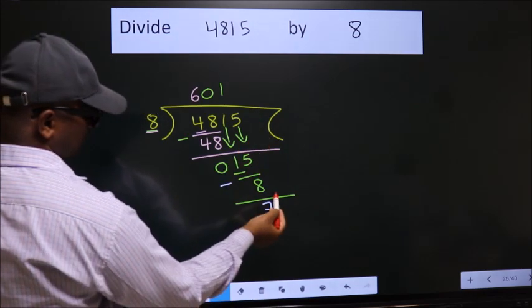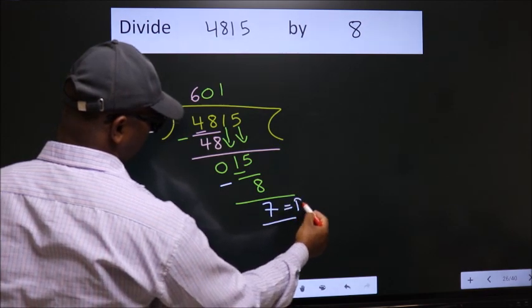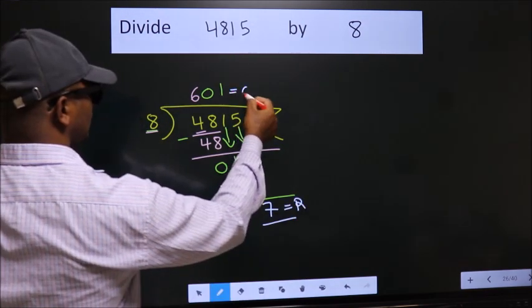No more numbers to bring down. So we stop here. This is our remainder. This is our quotient.